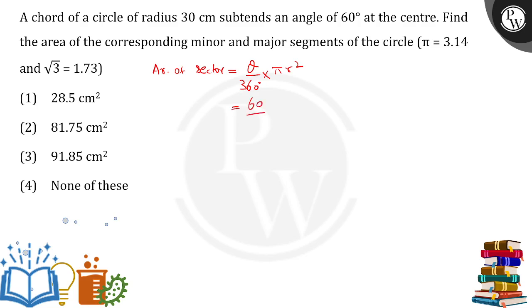That is 60/360 × π × r². Putting the value of π, which we've been told to take as 3.14, times r² where r is 30, so 30 × 30.